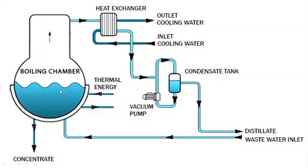Another model uses a boiling chamber where condensate enters at the bottom, thermal energy is added, and wastewater enters as inlet. Vapors pass through heat exchangers, exchanging heat with cooling water. The feed comes in, goes to the condensate tank, and distillate leaves from the bottom. This configuration uses both evaporation and cooling type crystallization, and the distillate is then sent to the next stage of crystallization.